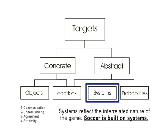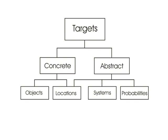Systems are an abstract relationship between two or more objects that depends on communication, mutual understanding, cooperation, and relative proximity. These include systems of play: a player with the ball, two central defenders, the back four, 1v1s, and so on.